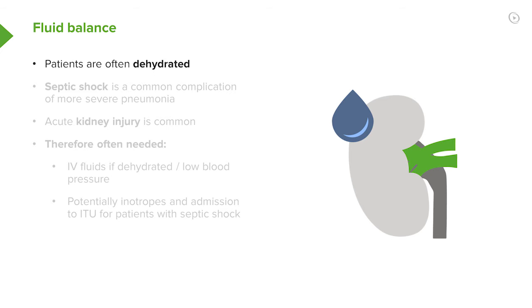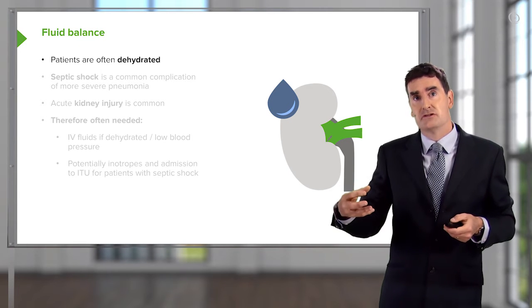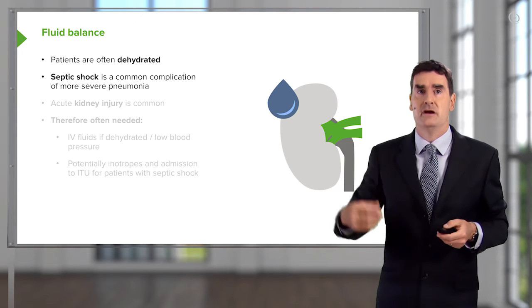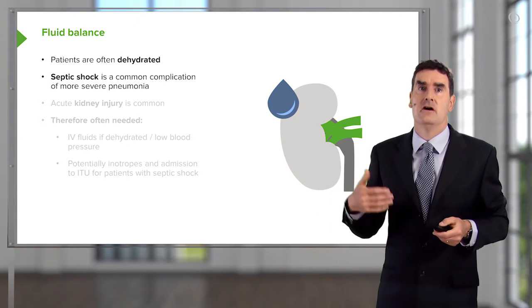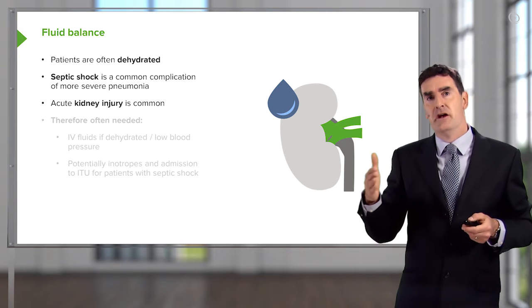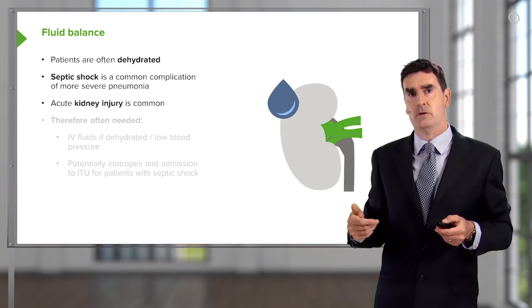Actually many patients, because they've been breathing fast, unable to drink and eat, are dehydrated. So dehydration is common, and beyond that, some patients will develop septic shock with persisting hypotension even after they've been rehydrated. Acute kidney injury is very common in these patients as a consequence of these problems.